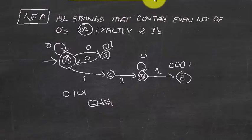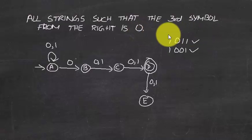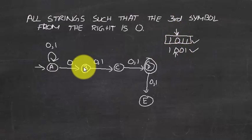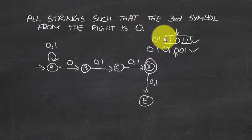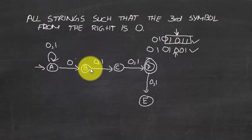Let's look at another example: all strings such that the third symbol from the right is zero. For example strings, the third symbol from the right is zero and those will be accepted. Whatever we encounter in the beginning we don't care — suppose we encounter 'zero one zero zero one zero', it doesn't matter. When we encounter that third-from-right zero, we go to the next state.